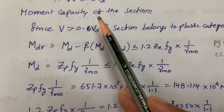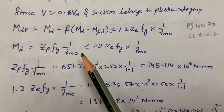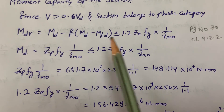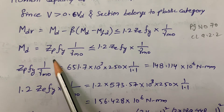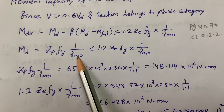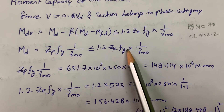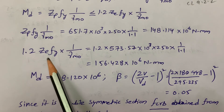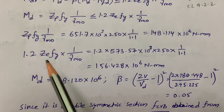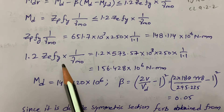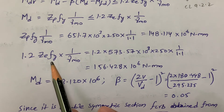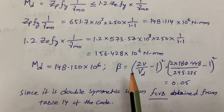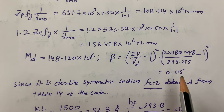Now we calculate moment capacity. From page 70, clause 9.2.2 of IS800:2007, Md = ZP × fy × (1/γm0), subject to Md ≤ 1.2 × Zd × fy × (1/γm0). I substituted all values including ZP and Zd from the steel tables. I also calculated the beta value using β = (2V/Vd − 1)², where all values are known.